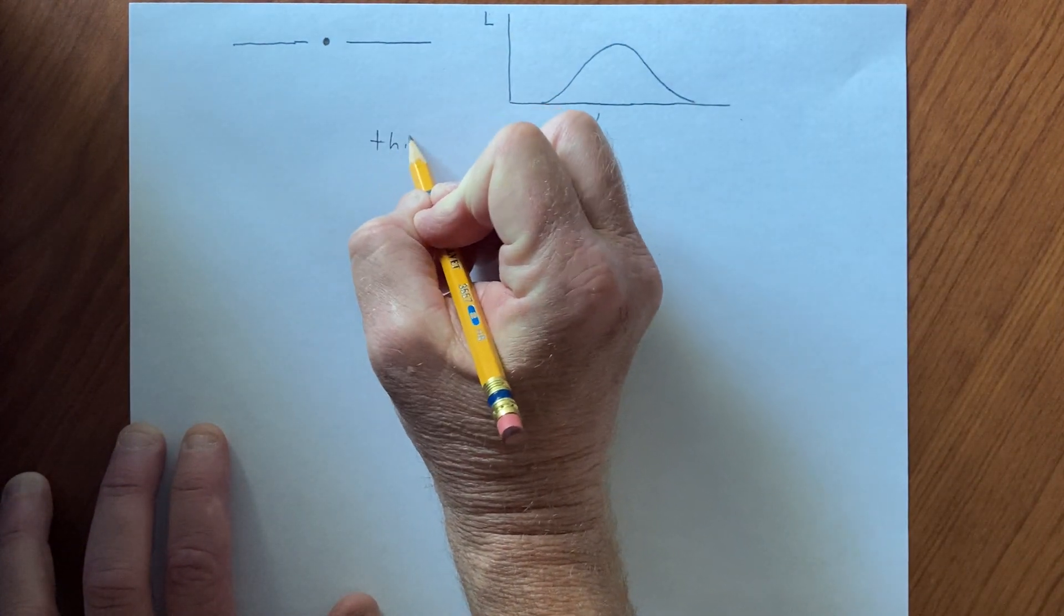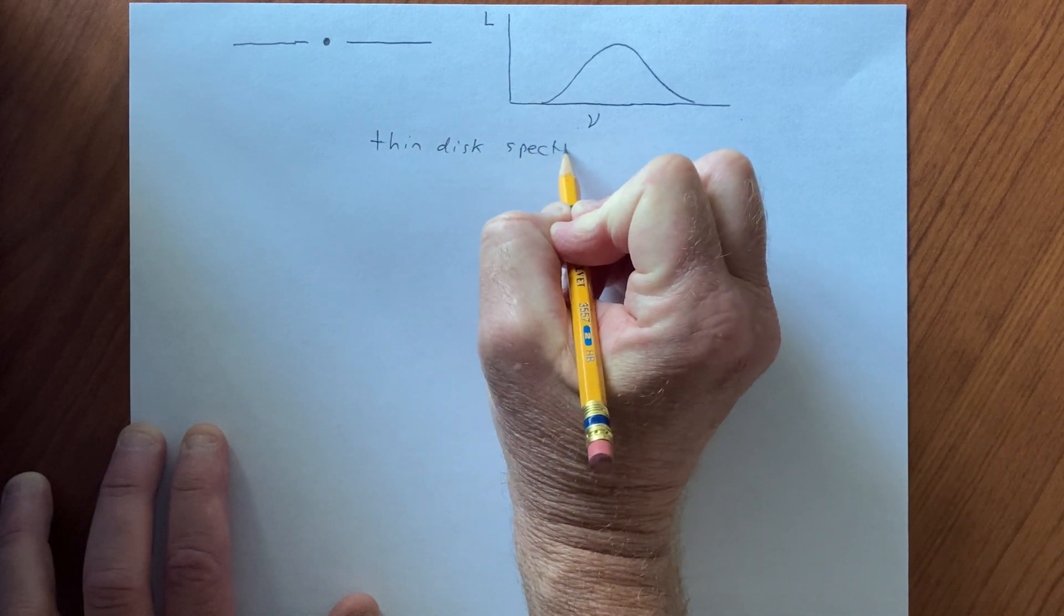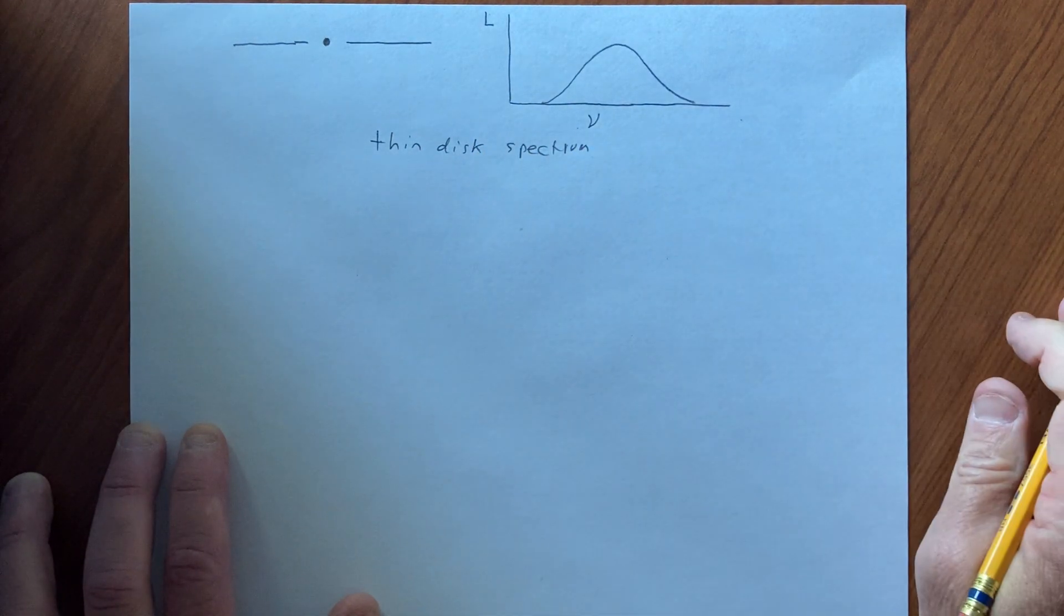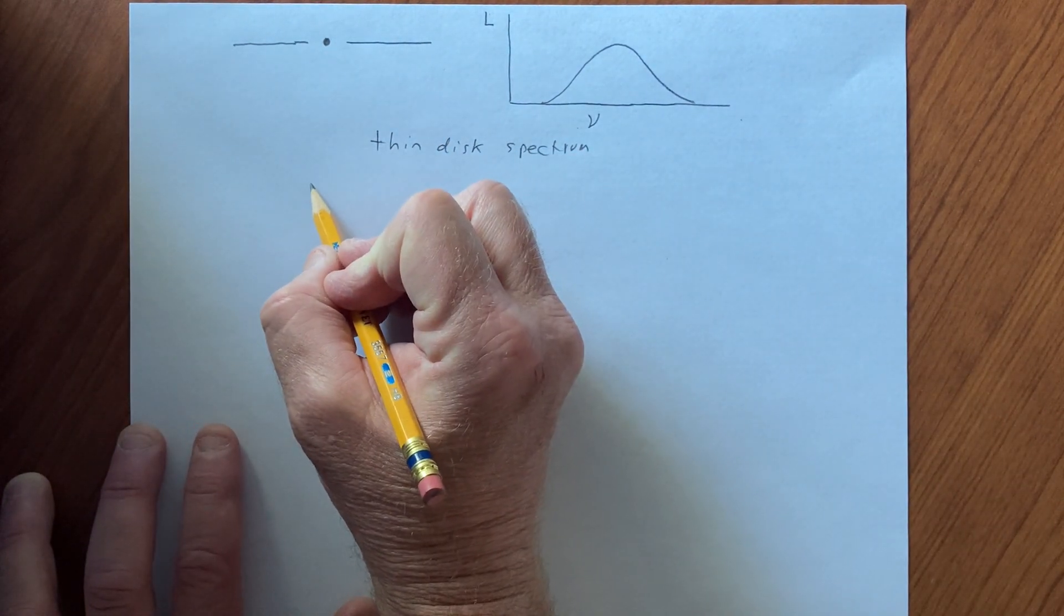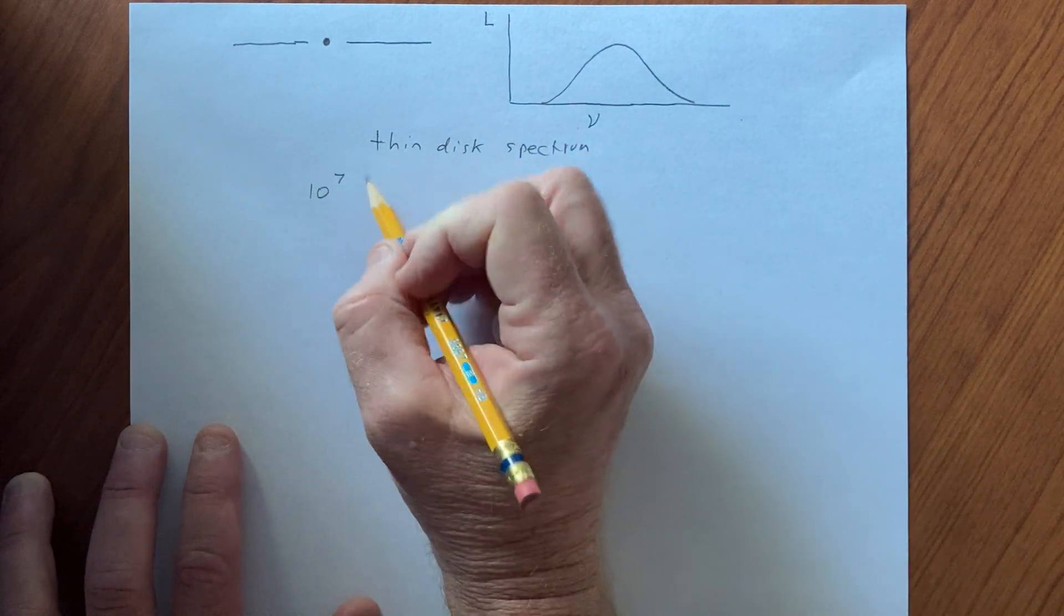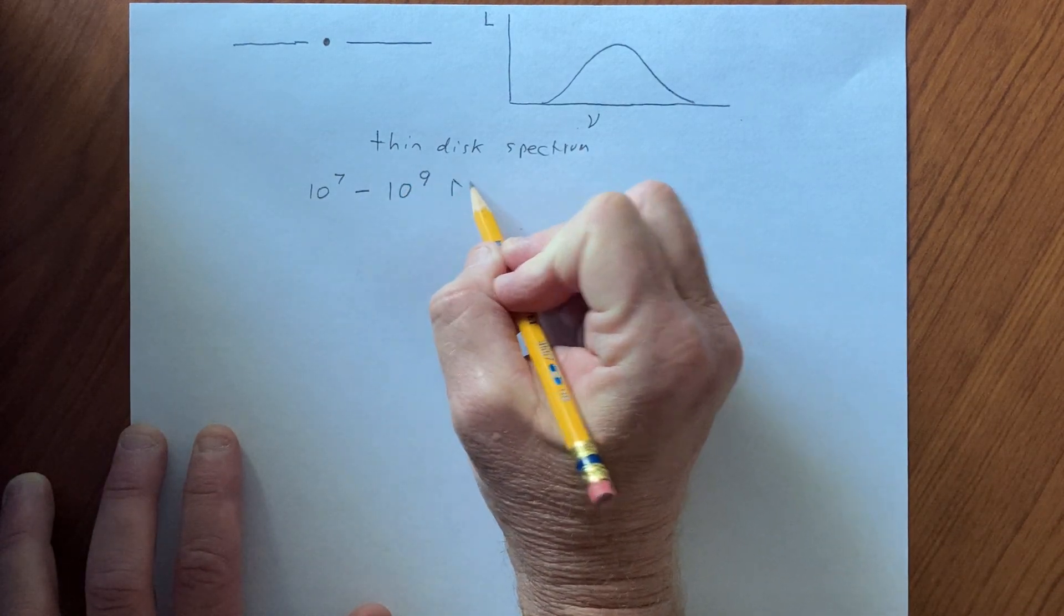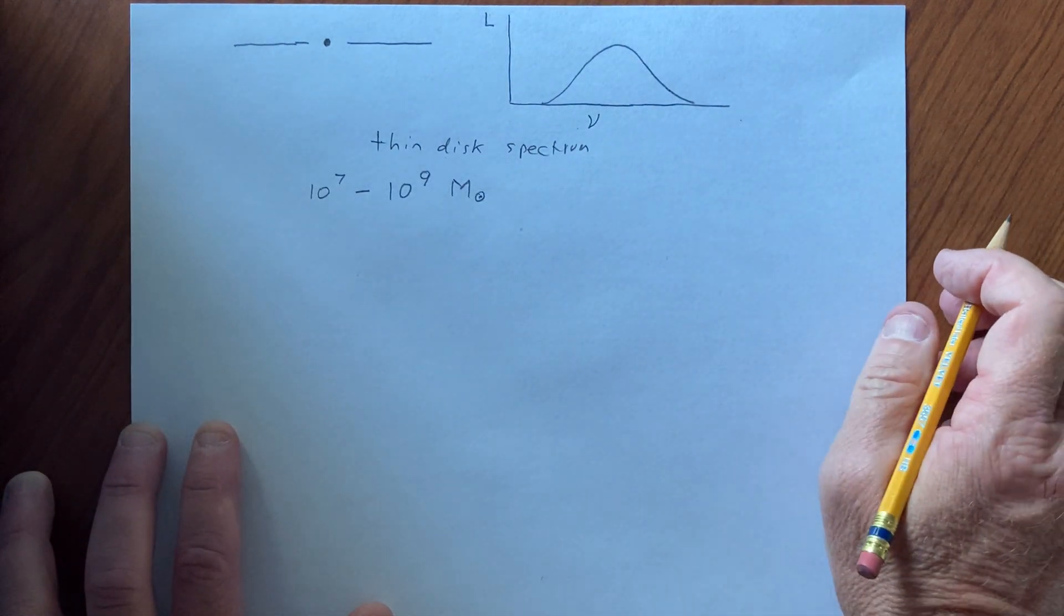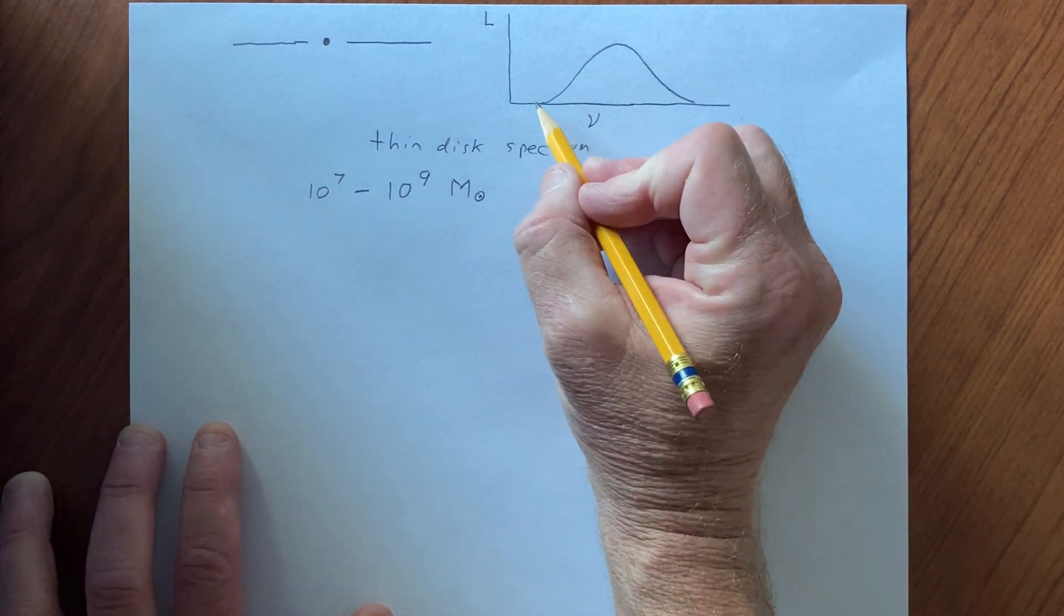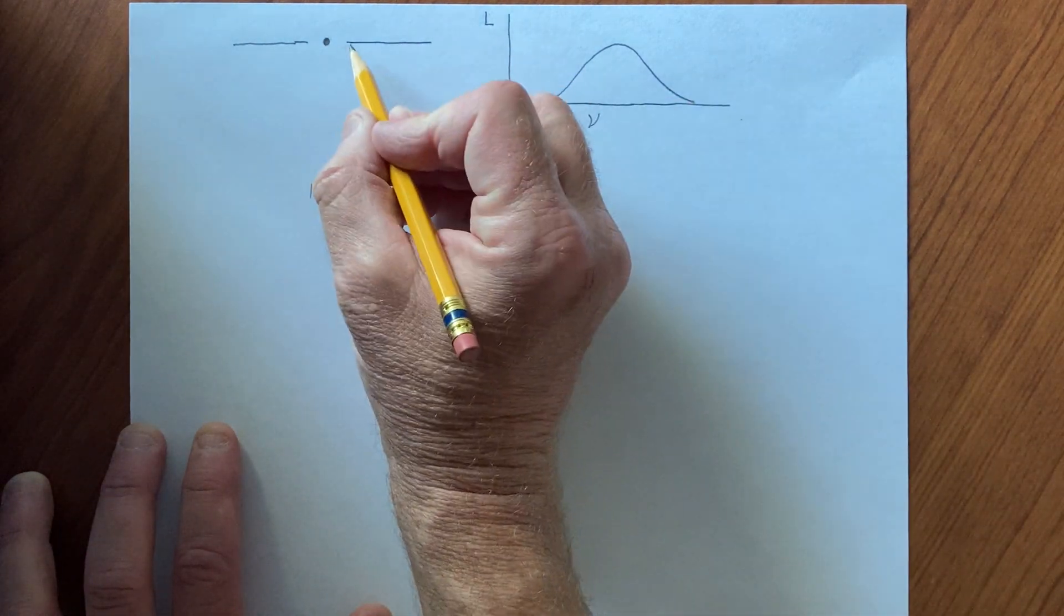So we're talking about a thin disk spectrum, and for black holes in active galaxies, where the range of mass could be, say, between 10 to the 7, 10 to the 9 solar mass black holes.